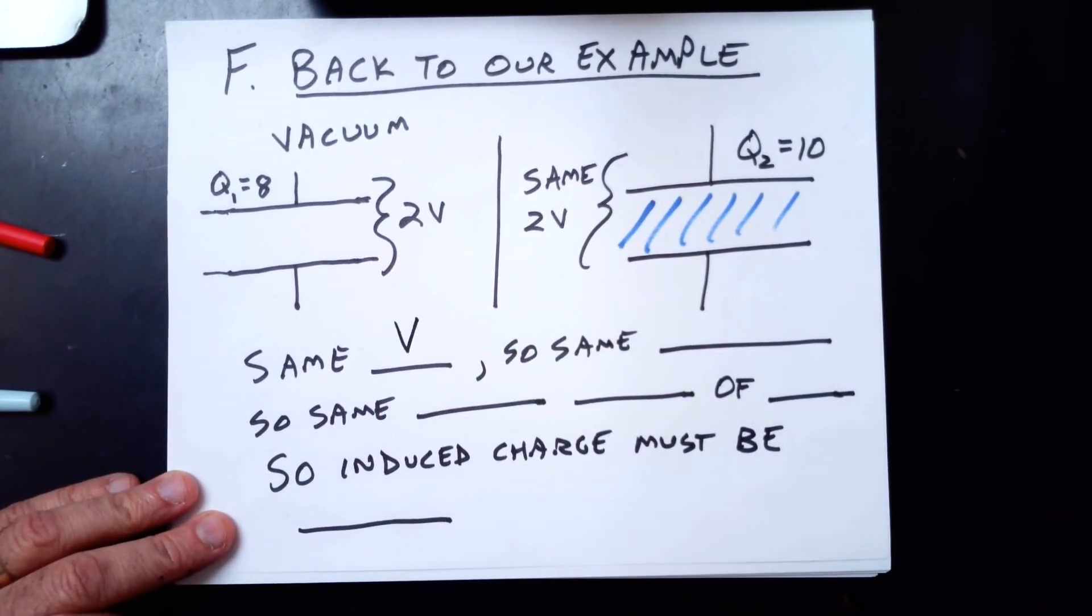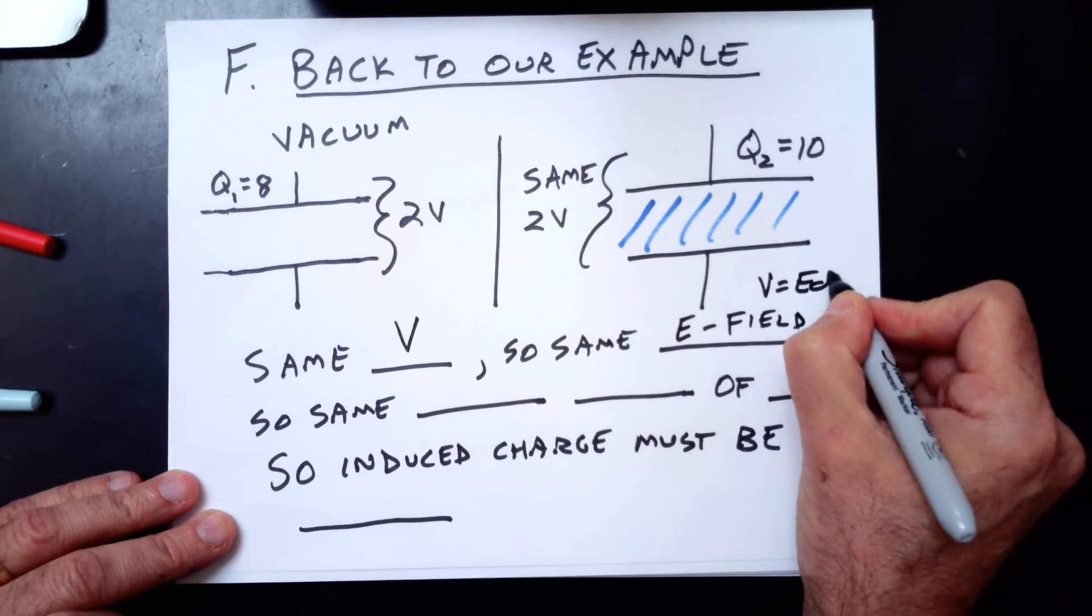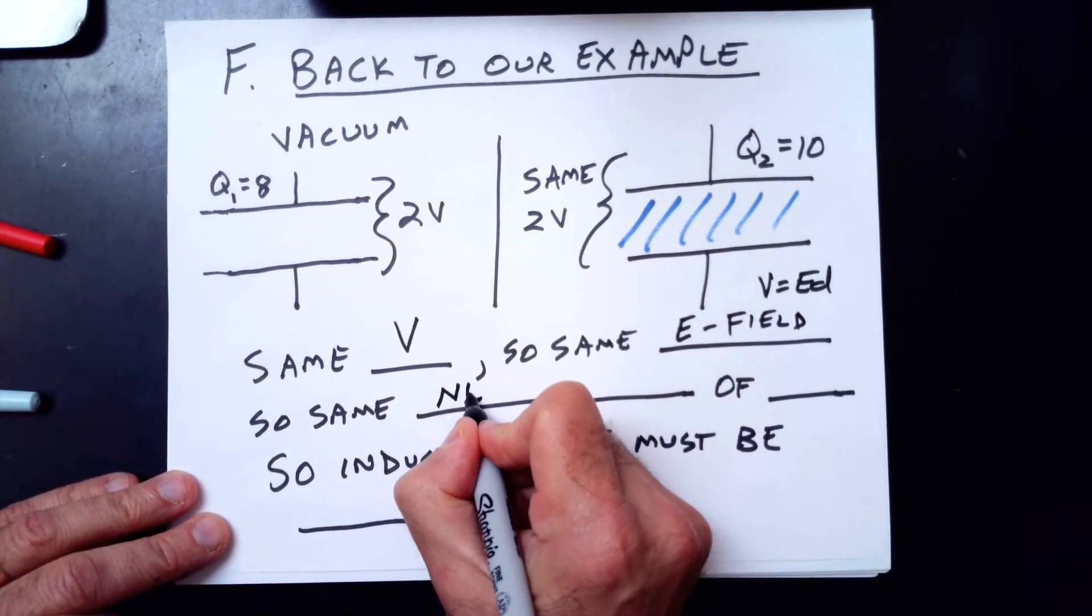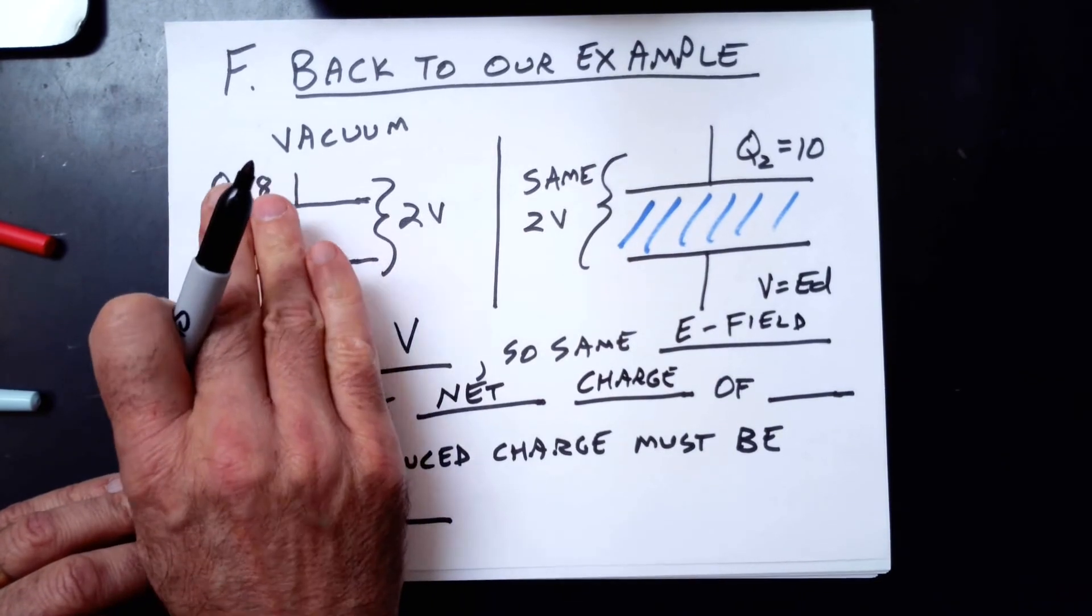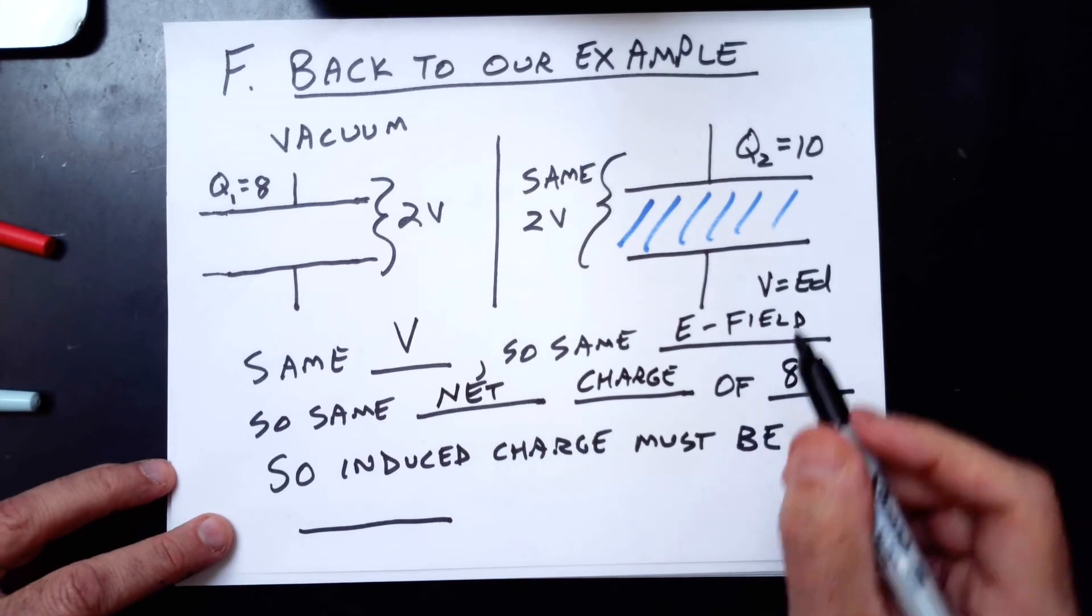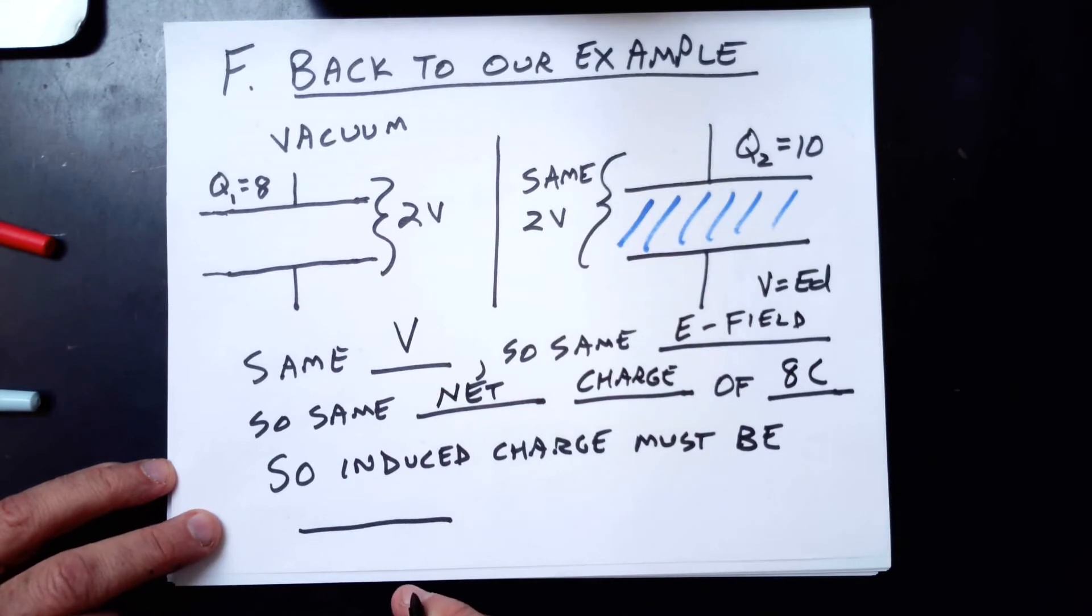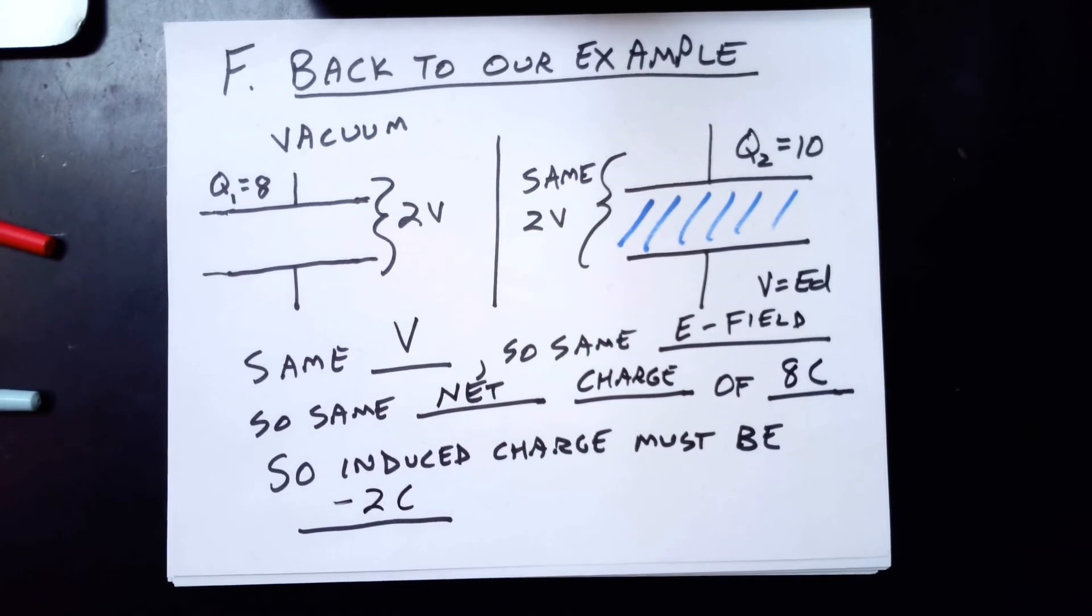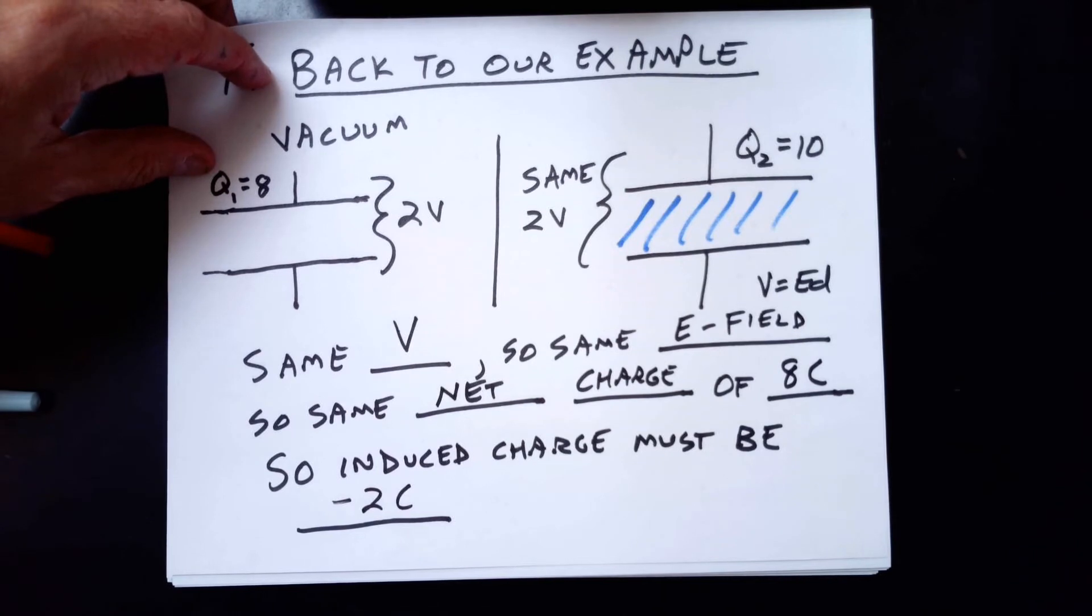But we'll write the reasoning here. Same voltage, so same electric field, because V equals ED for a constant electric field. We're not changing D. So same net charge of what? Same net charge. Well, here, the only charge is 8, so this must have a net charge of 8. Same net charge of 8 Coulomb. So the induced charge here inside on this top edge of the dielectric must be what? Well, to get 10 down to a net of 8, it must be negative 2 Coulombs. So that's the general idea of how to figure out induced charge very quickly.